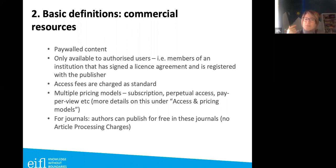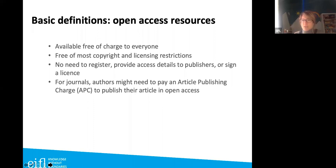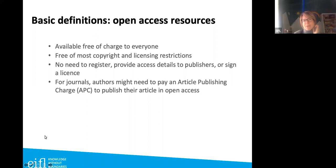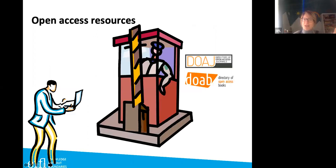Getting free access to commercial resources is like a subscription — you still license the content, you just don't pay. For journals, authors can usually publish for free but readers pay if it's paywalled content. On the other side, open access resources have no barriers at all — available free of charge to everybody, no registration needed, no license to sign, mostly free of copyright restrictions. For open access journals, there's usually a charge for authors to publish.